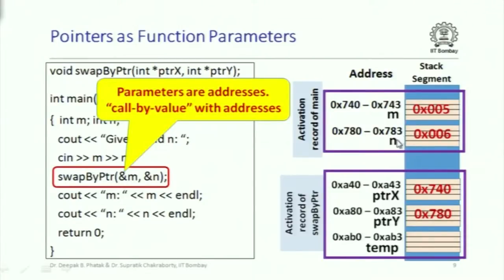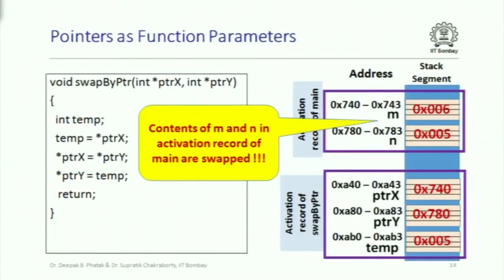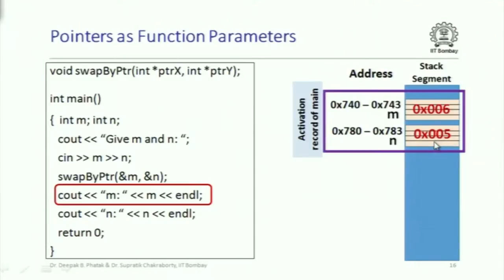The activation record of main has M and N at certain addresses. The activation record of swap_by_pointer receives copies of those addresses as its formal parameters. Because swap_by_pointer has the addresses of two local variables from main's activation record, it can use the star operator to go and read or change their values — and that is exactly how the values of M and N are changed in main's activation record by a different function.